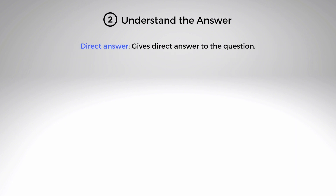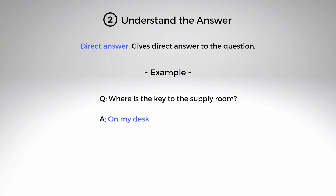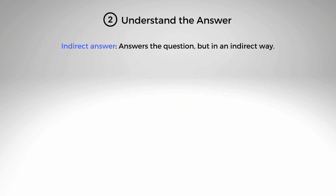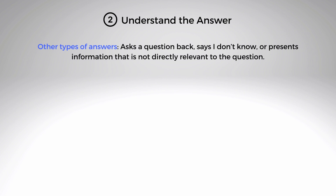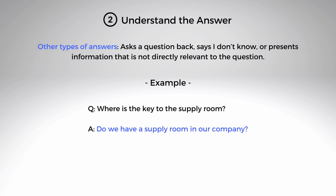A direct answer gives a direct answer to the question. For example, 'Where is the key to the supply room?' — 'On my desk.' An indirect answer answers the question but in an indirect way. For example, 'Where is the key to the supply room?' — 'I saw Mark use it this morning.' Other types of answers might ask a question back, say 'I don't know,' or present irrelevant information. For example, 'Do we have a supply room in our company?'